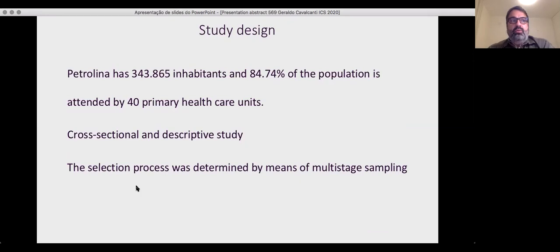Petrolina has almost 344,000 inhabitants, and 85% of the population is attended by 40 primary health care units, including rural and urban areas.